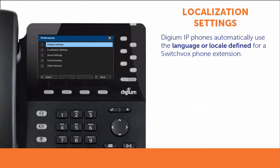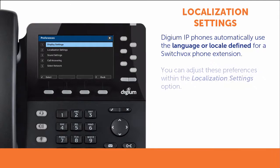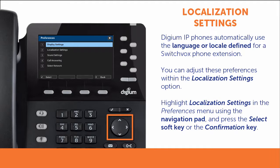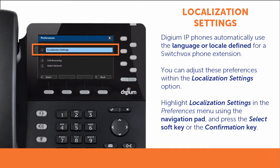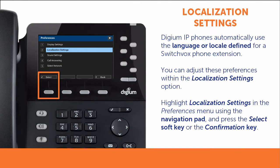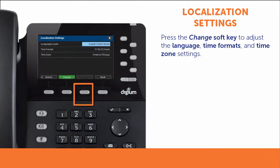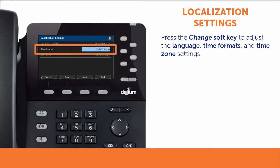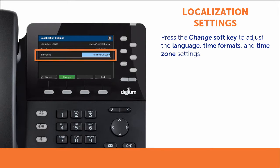Digium IP phones automatically use the language or locale defined for a SwitchVox phone extension. You can also adjust these preferences with the Localization settings option. Using the navigation pad, highlight Localization settings in the Preferences menu and choose the Select soft key or press the confirmation key on the phone. Select the Change soft key to adjust language, 12-hour or 24-hour time formats, and your time zone.